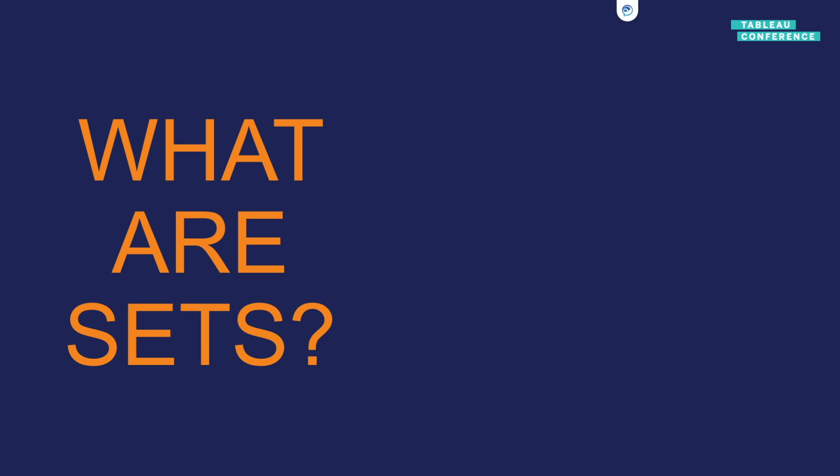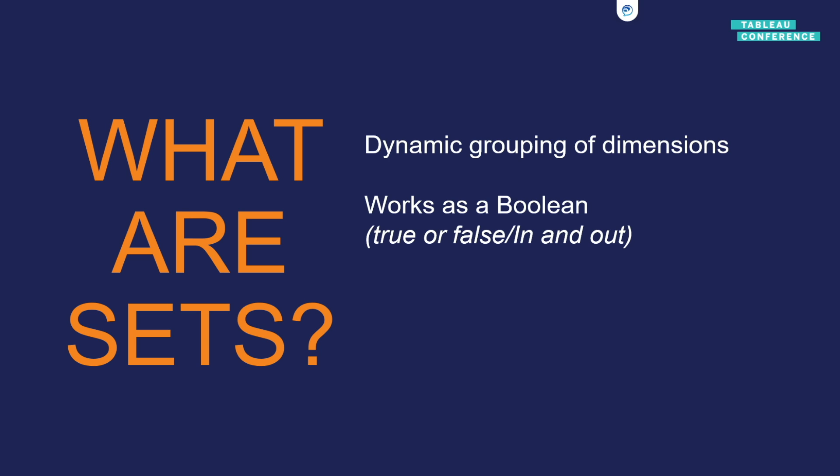In order to understand this, we need to talk about what sets are. Sets are a way to dynamically group dimensions, but they only group them in two ways — in or out — which means the result of a set is always a true or false. It kind of works like a Boolean, and this is quite important when we start building calculations.